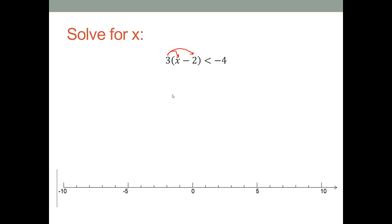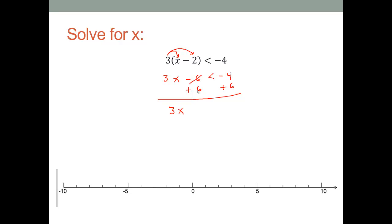Starting with this first one, we're going to use our distributive property to get rid of the parentheses. So we'll get three times x is 3x, and three times negative two is negative six. Then we're going to add six to both sides to get all of our constants on the right hand side. 3x — the negative six and positive six cancel out.